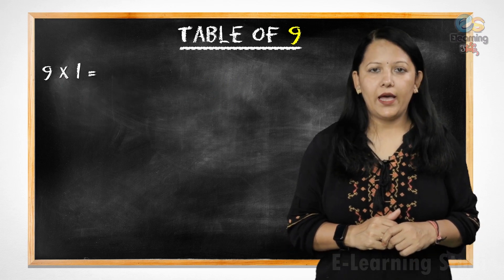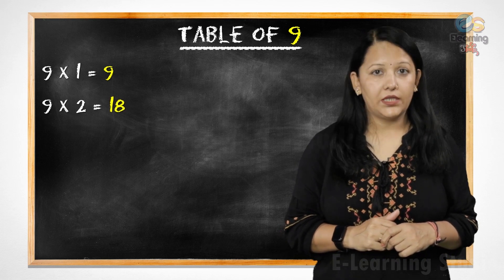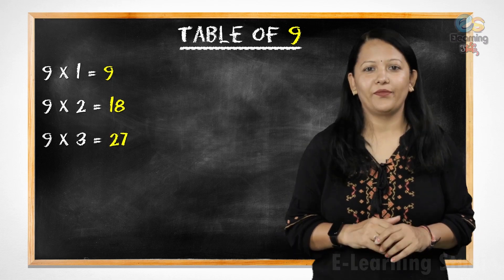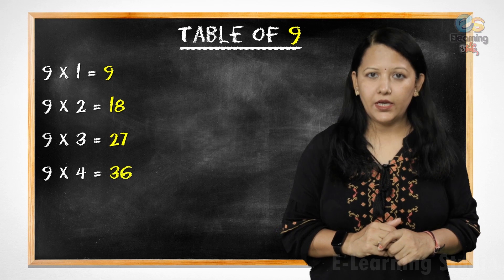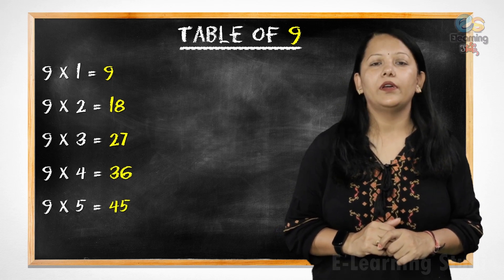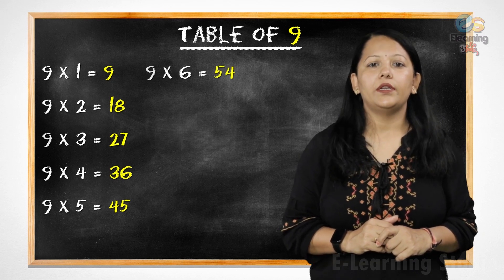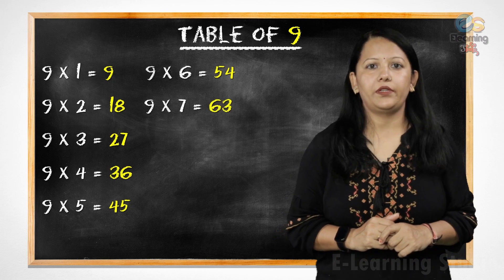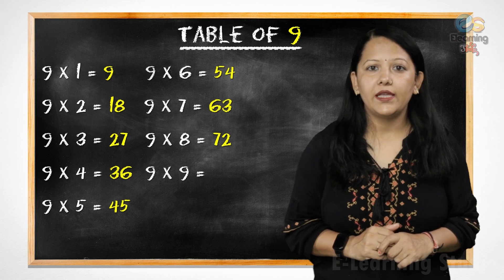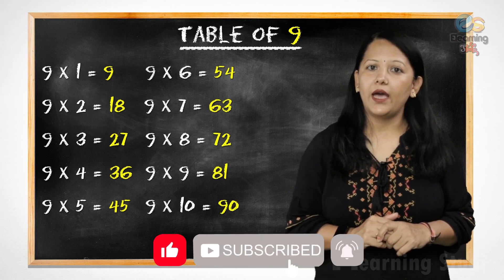Let's revise it. 9 ones are 9, 9 twos are 18, 9 threes are 27, 9 fours are 36, 9 fives are 45, 9 sixes are 54, 9 sevens are 63, 9 eights are 72, 9 nines are 81, 9 tens are 90.